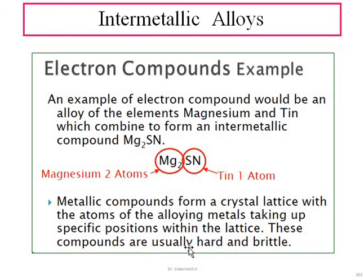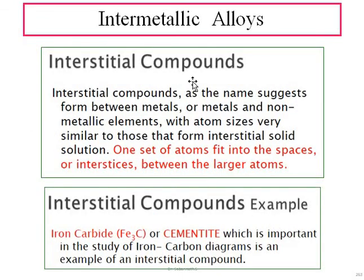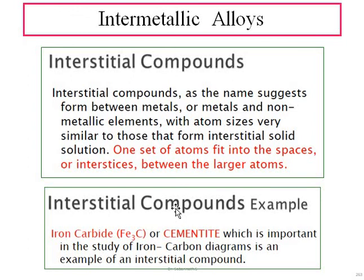The second sub-classification is interstitial compounds. The alloying metal atoms occupy the interstitial spaces — the gaps between larger atoms — in a regular ordered arrangement. Small alloying elements fit between the larger atoms. A classic example is cementite, or iron carbide (Fe₃C), which will be discussed further in the iron-carbon phase diagram. That concludes the topic of intermetallic alloys.